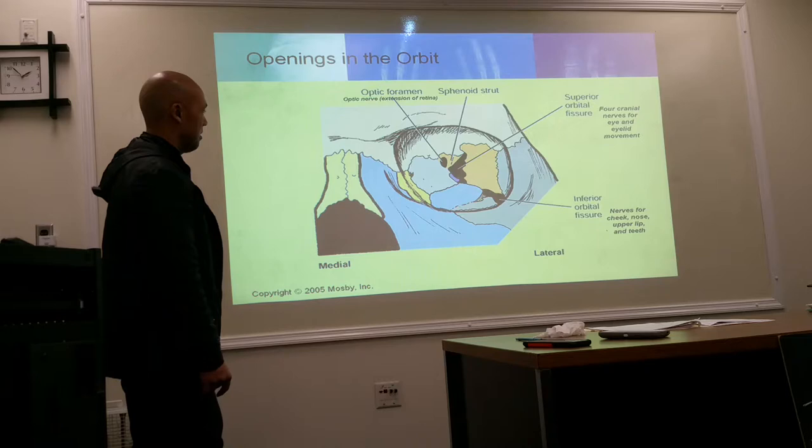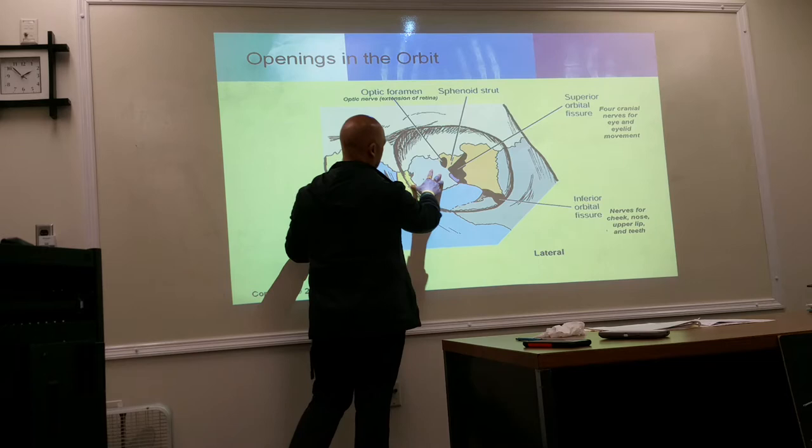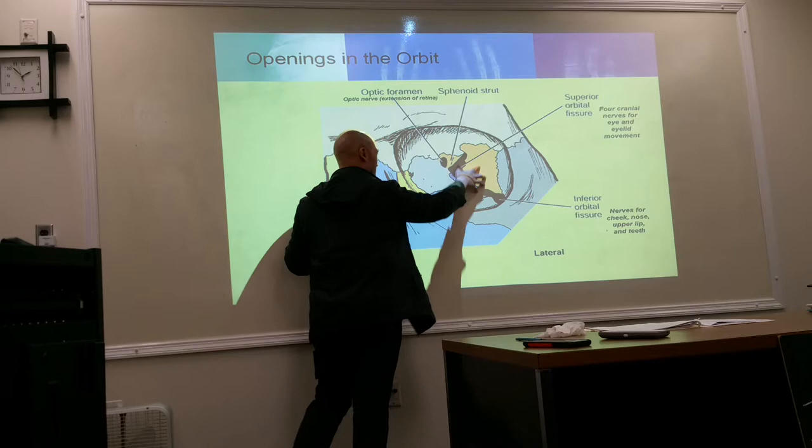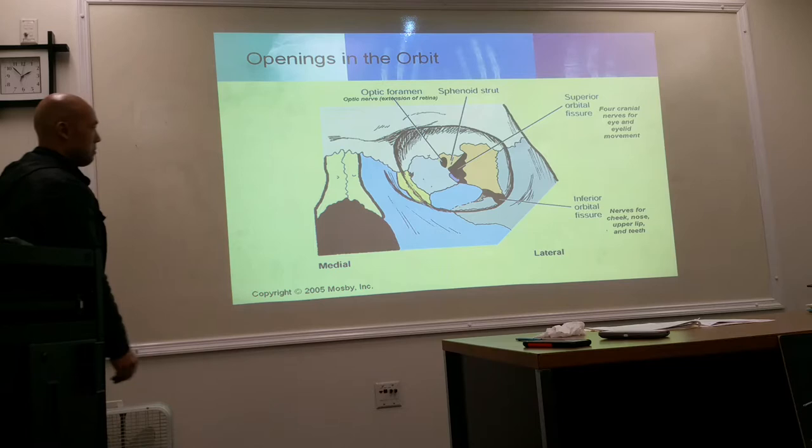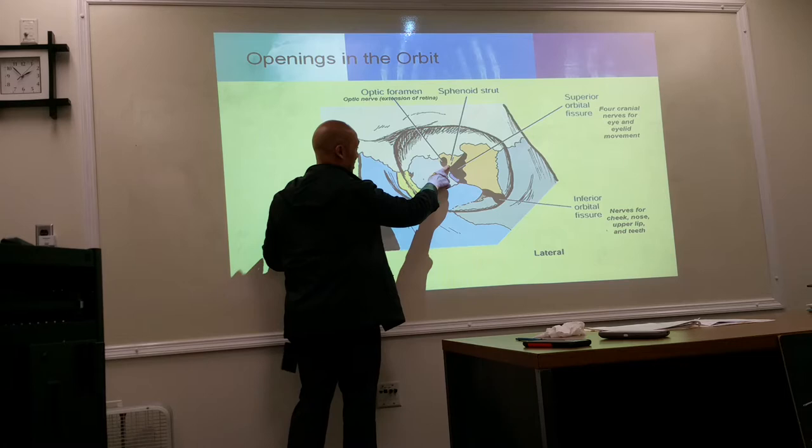The area between the optic foramen and the superior orbital fissure is a very thin bone, still part of the sphenoid bone, known as the sphenoid strut. When performing the Rhese method, this is what we are looking for — to see if there is a break in it.